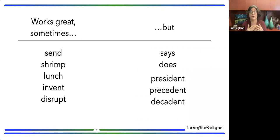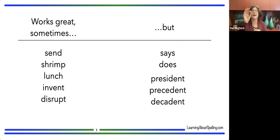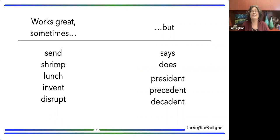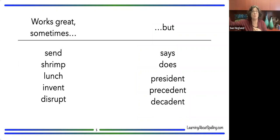As we get into longer words, the challenges increase. Words like 'president,' 'precedent,' and 'decadent' show that we often have more than one way to spell a phoneme. In 'president' there's a /z/ sound but it's spelled with an 's.' In 'precedent' the /s/ sound is spelled with a 'c.' All three words also have a medial vowel — the schwa — that sounds nearly identical but is spelled differently, making it very hard to connect to a particular spelling from pronunciation alone.